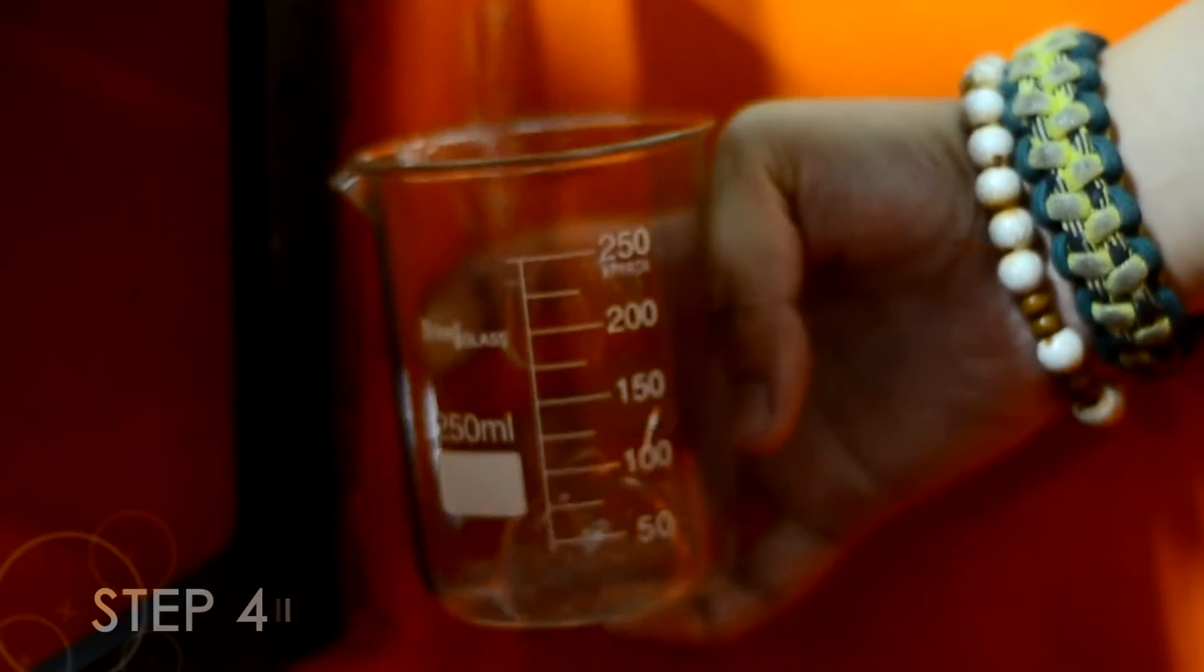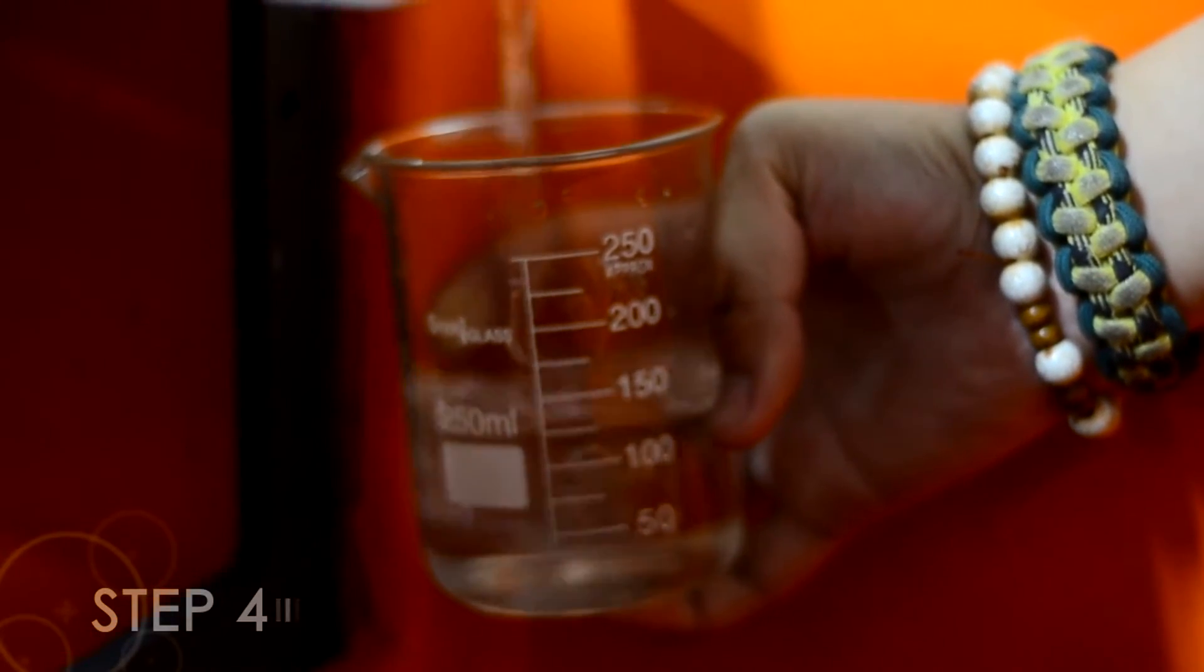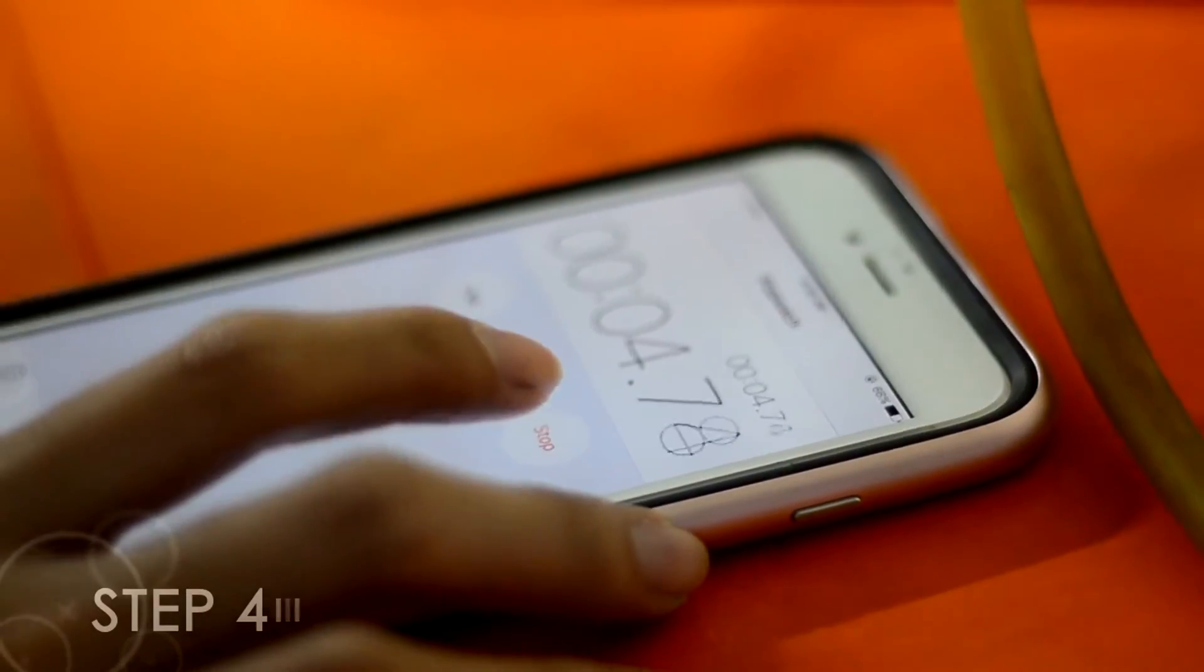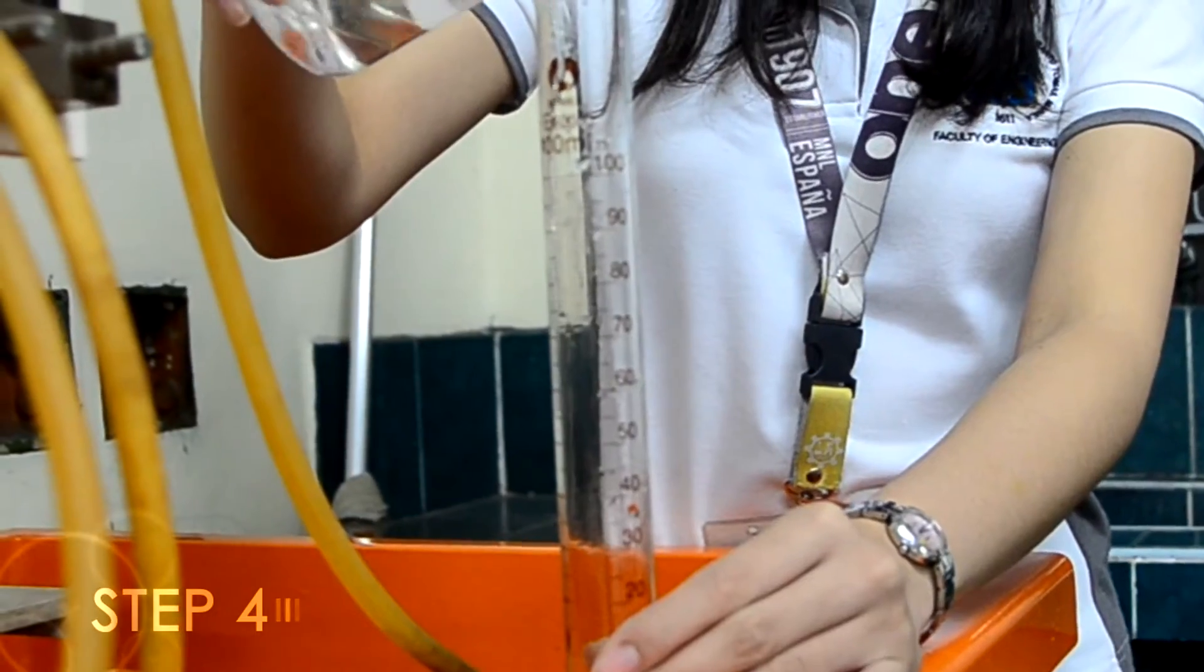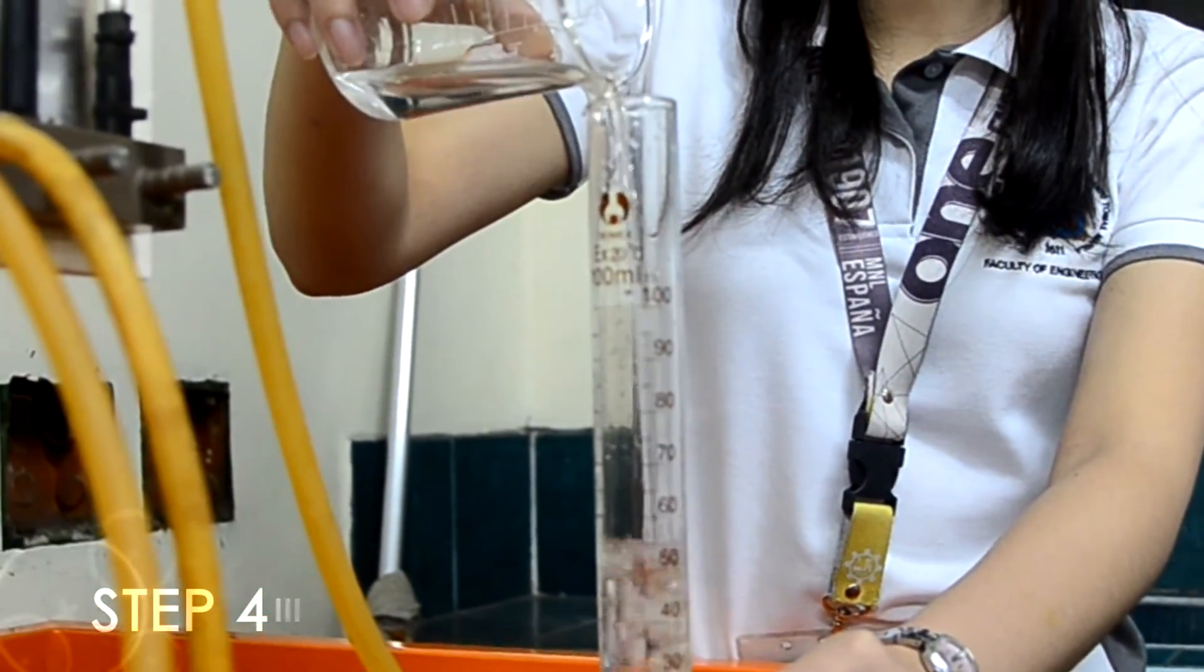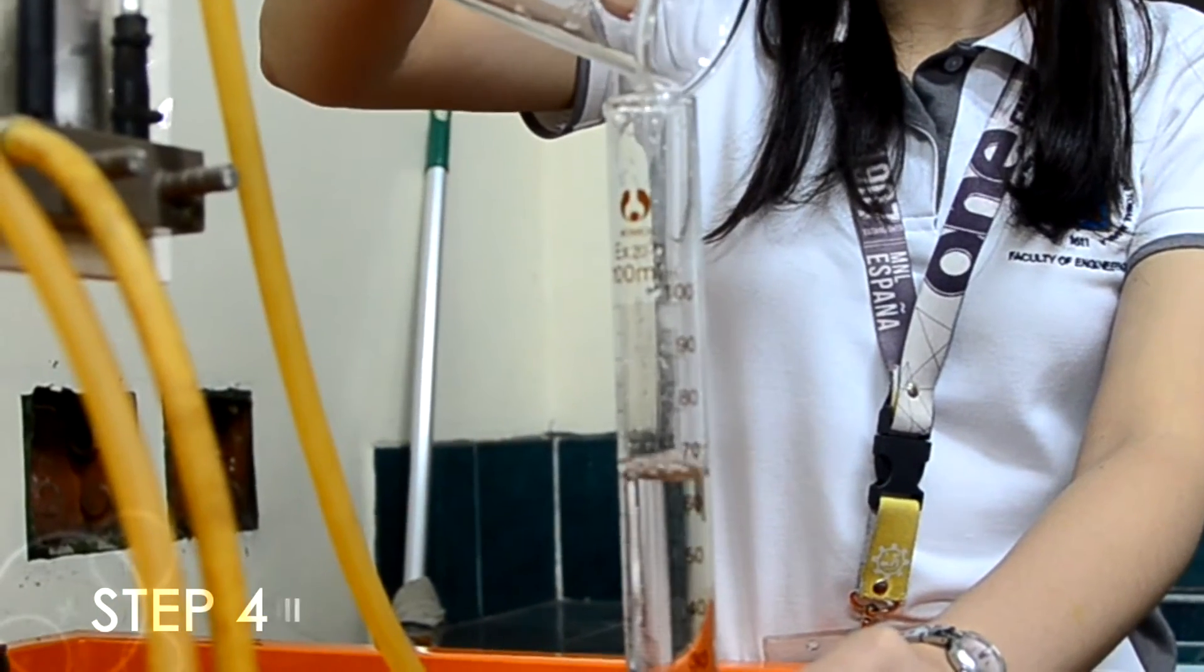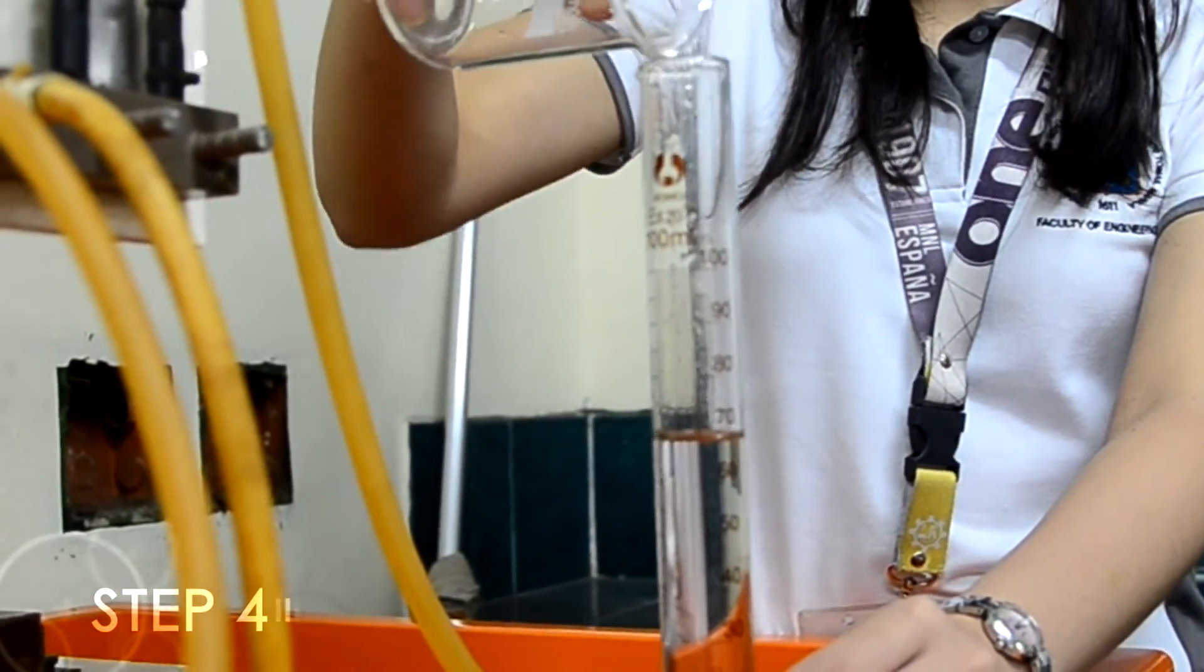Due to small amount of discharge, collecting of water volume with specific time, 5 seconds, is more convenient in determining discharge by the use of equation: discharge equals volume over time. Measurement of the volume can be collected using the graduated cylinder to obtain a more accurate reading.